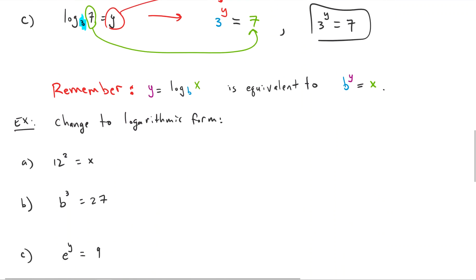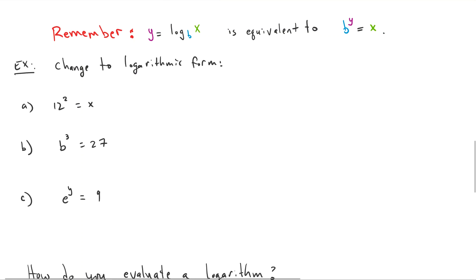Now let's go the other direction — we converted from logs to exponentials, now let's go from exponentials to logs. We're still using the same equivalency. We know this is going to be log base something of something equals something. We have three unknowns to fill in, and we just look at our equivalency to tell us what goes where.